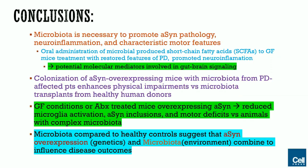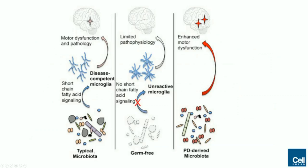Germ-free mice or antibiotic-treated mice overexpressing a-syn had reduced microglial activation and a-syn inclusions, indicating that microbiota played a significant role in the disease process. Microbiota compared to healthy controls indicated that a-syn overexpression from genetics and microbiota from the environment combined to influence disease — both the genetic and strong environmental components played a role. In summary, typical microbiota through short-chain fatty acid signaling leads to motor dysfunction and pathology; if these short-chain fatty acids are absent in germ-free mice, pathophysiology is limited. Mice with Parkinson's-derived microbiota had enhanced motor dysfunction.